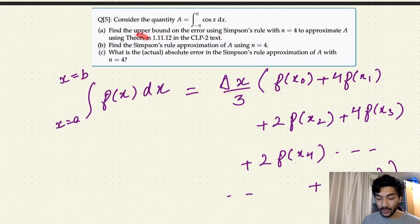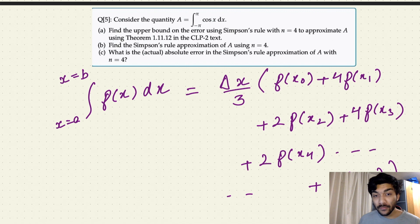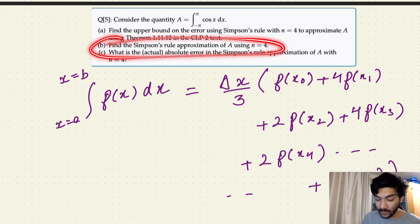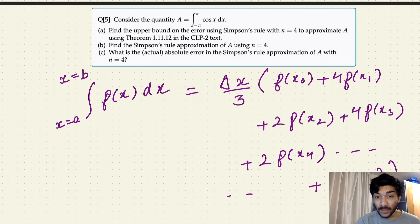This means the Simpson's rule approximation is exactly equal to the actual answer of the definite integral. That was a fairly simple question where we used the Simpson's rule formula to approximate the integral and then calculated the absolute error by subtracting the actual value from the approximated value. That's it for this video — feel free to comment if you have any doubts, follow the channel to get notified about new videos, thank you so much for watching, bye!